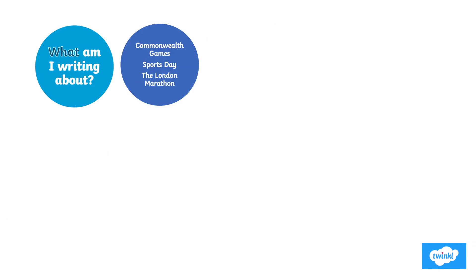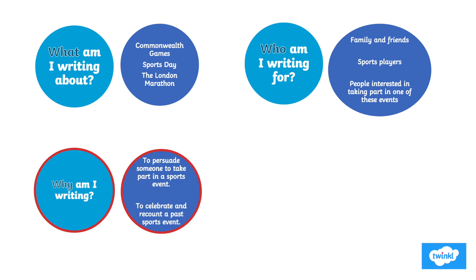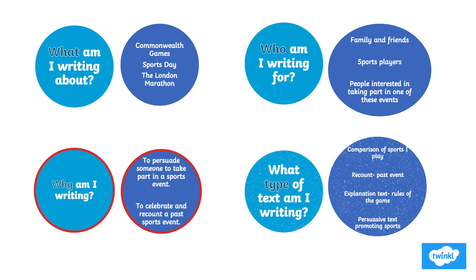So what am I writing about? Who am I writing for? Who's my audience — family, friends, sports players? Why am I writing? The purpose is so important. Am I persuading or recounting? And finally, what type of text am I writing? Today we will choose a recount on a past event, but your child may decide to explain the rules of a game or persuade someone to take up a sport instead.